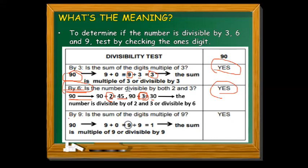And then last, divisibility by 9: is the sum of the digits a multiple of 9? The sum of the digits of 90 is 9 plus 0 equals 9. Divide 9 by 9 equals 1, with no remainder. It means 90 is divisible by 9. It's a yes.